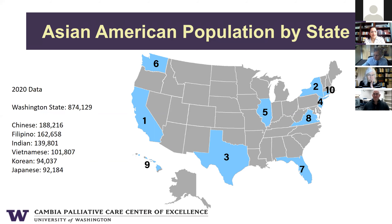The largest subgroups in Washington state are Chinese, followed by Filipino, Indian, Vietnamese, Korean, and Japanese — a little bit different than the largest subgroups in the U.S. as a whole, but not by much.